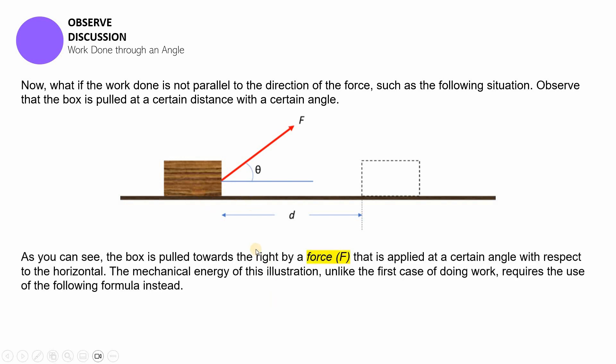Now, as you can see, the box is pulled towards the right by a force that is applied at a certain angle with respect to the horizontal. Although the box was moved towards the right, that was successful. But the application of the force is quite different in this case. It's not entirely applied towards the right. It's actually applied to a kind of north-east, right?